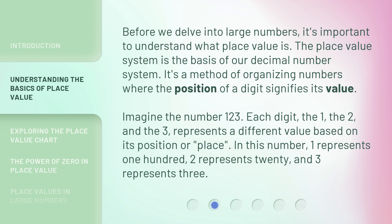Imagine the number 123. Each digit — the 1, the 2, and the 3 — represents a different value based on its position or place. In this number, 1 represents 100, 2 represents 20, and 3 represents 3.